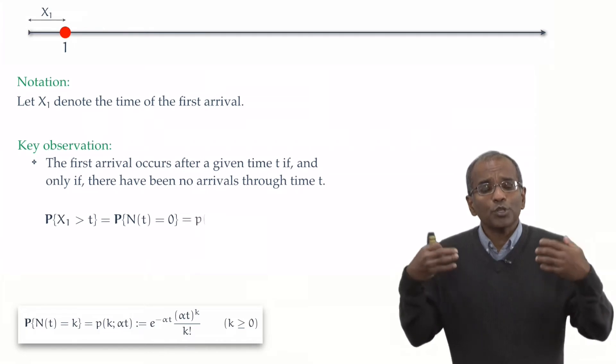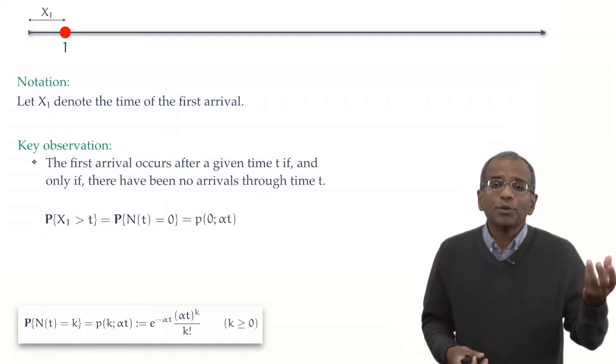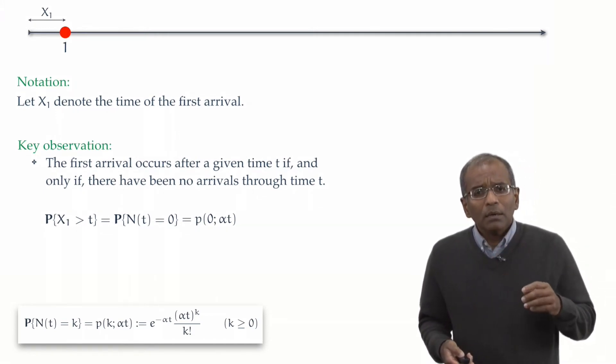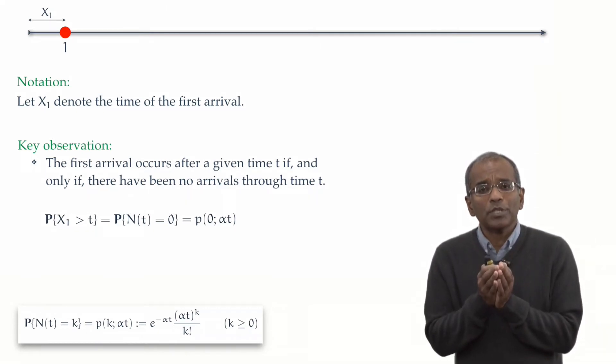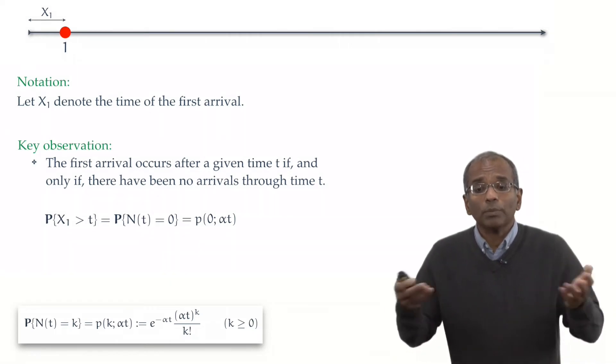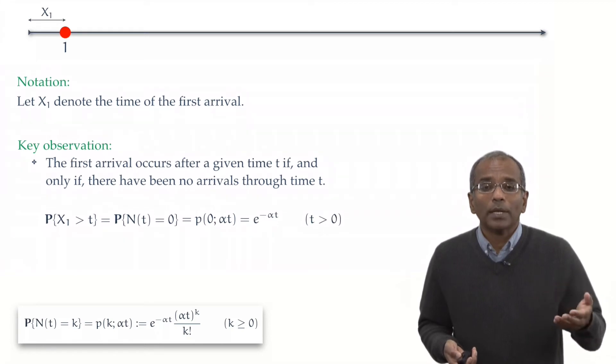It's p, the Poisson probability of no arrivals in a duration t. Okay, now we just read out the answer. If in the Poisson formula we put in k equal to 0, the fraction becomes 1 over 1, and all that remains is a simple exponential form, e to the power minus alpha t.